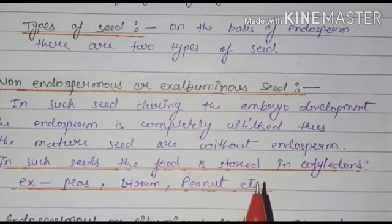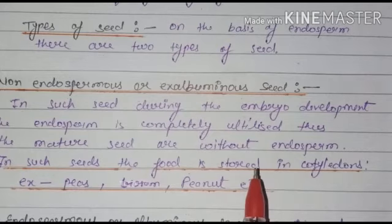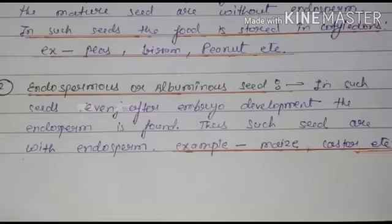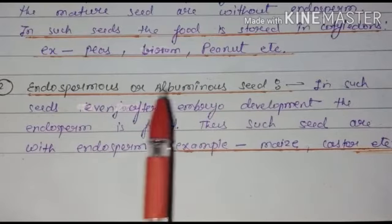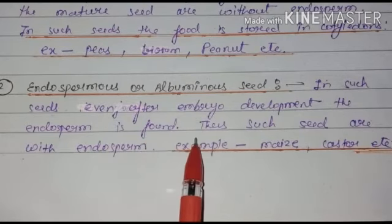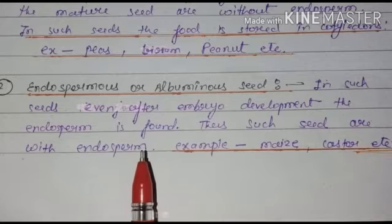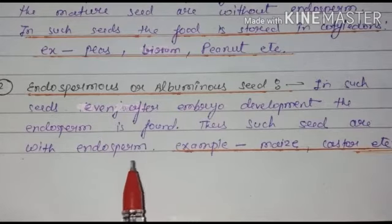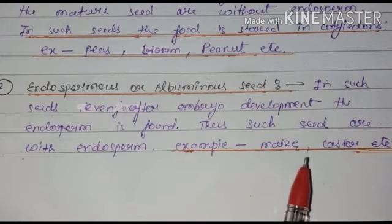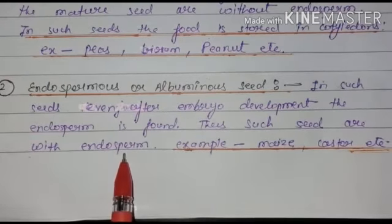The food is made by the endosperm, but it is taken up by the cotyledon, and the cotyledon later provides this nourishment and food to the seed. Examples of non-endospermous seeds are pea, gram, peanut, etc. The second type is endospermous or albuminous seeds — seeds in which endosperm is present. Even after embryo development, the endosperm is found. Examples are maize, castor, etc. Here the endosperm provides nourishment to the seed.